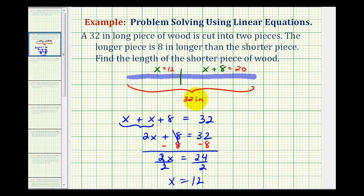And notice how the sum is thirty-two. And this length here is eight inches longer than the other piece. But to answer the question, we want to know what the length is of the shorter piece. The shorter piece does have length x inches. So the shorter piece is twelve inches.